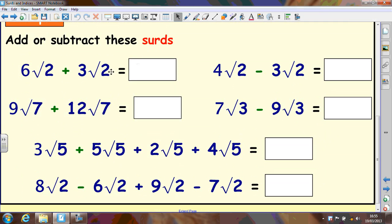Okay so let's look at these ones here quickly. We've got 6 root 2 plus 3 root 2 and that makes 9 root 2. We've got 9 root 7 plus 12 root 7. Well altogether that's 21 root 7.